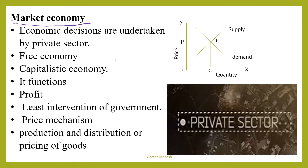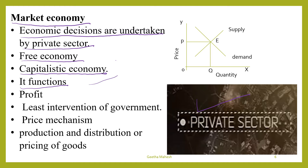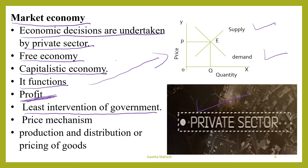The second system is market economy. In the market economy all economic activities are owned and controlled by the private sector. Economic decisions are taken by private individuals or private entrepreneurs. Market economy is also known as capitalistic economy or free economy, meaning producers are free to decide what to produce, how to produce, and for whom to produce. This economy functions on the basis of price mechanism or supply and demand, and producers always try to maximize their profit.